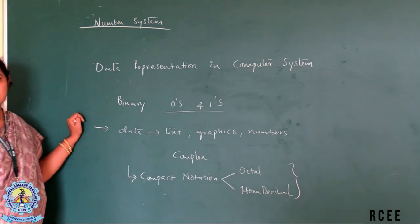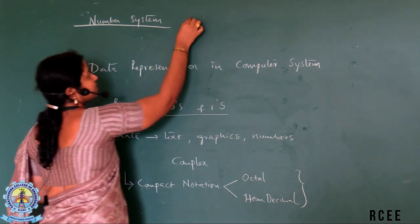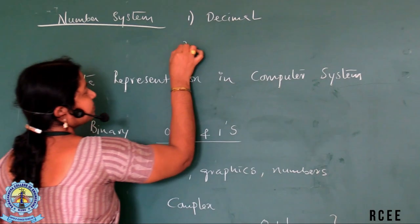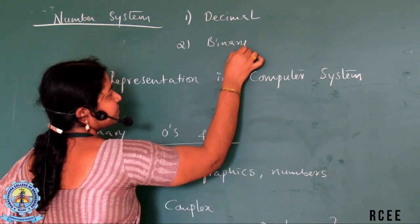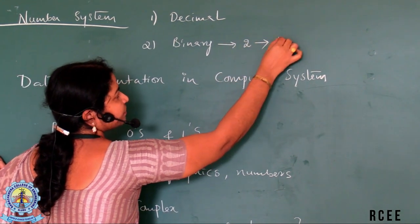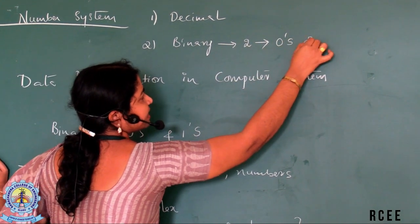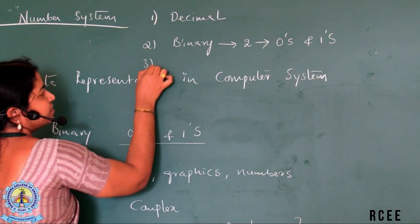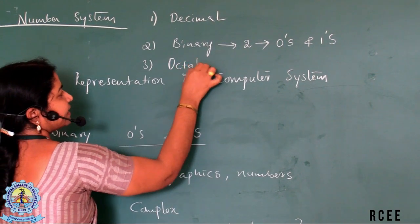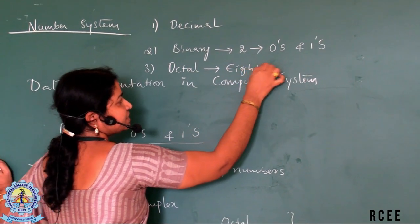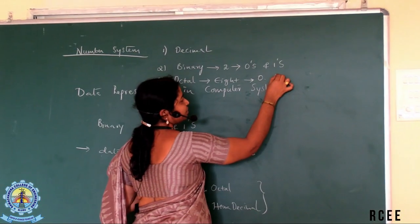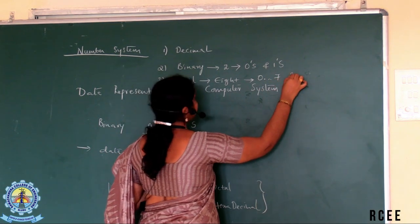We have four different types of number systems. One is decimal number system. The other one is binary number system. Binary means two where we will be using only zeros and ones. Third one, octal. In Latin, octal means eight which uses unique numbers starting from zero to seven.